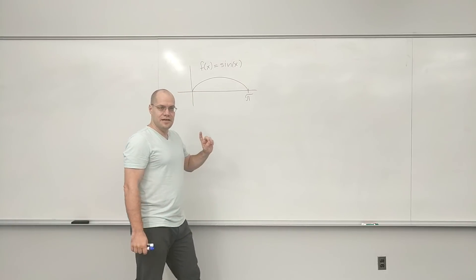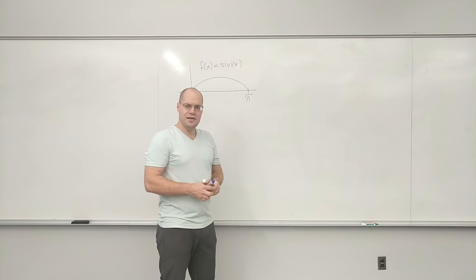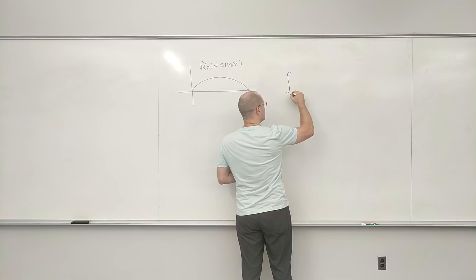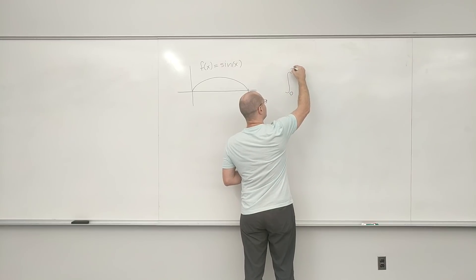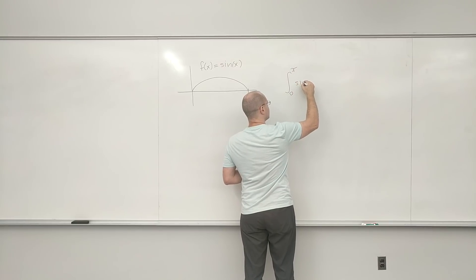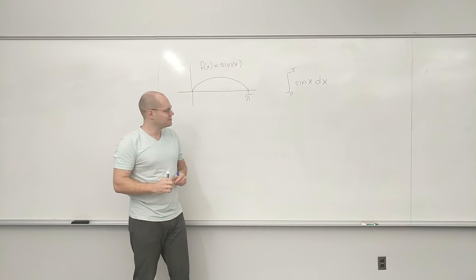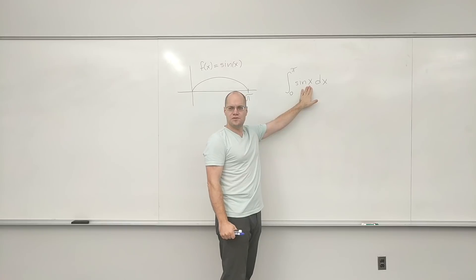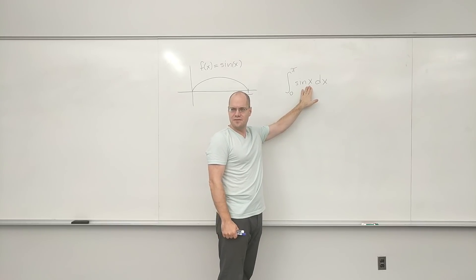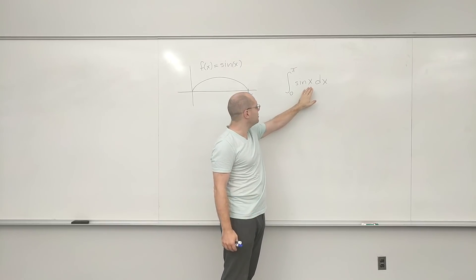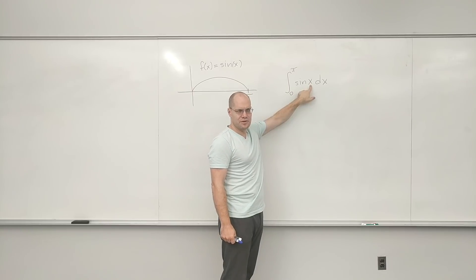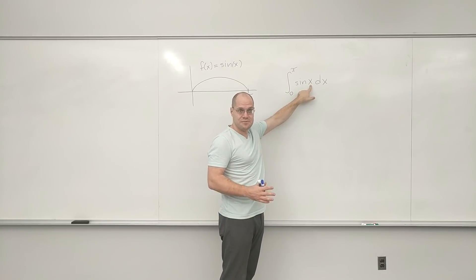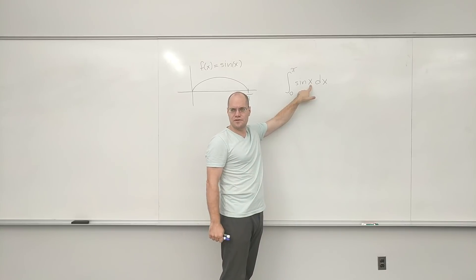So this area is denoted in integral terms as the integral from zero to π of sine of x. And let me say something about aesthetics. I'll make lots of comments about aesthetics throughout the course. But try to use as few parentheses as possible.